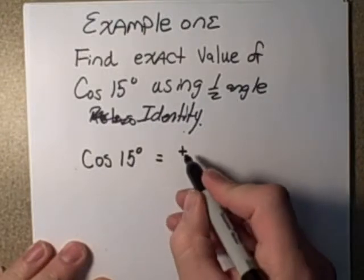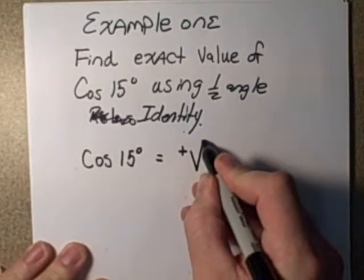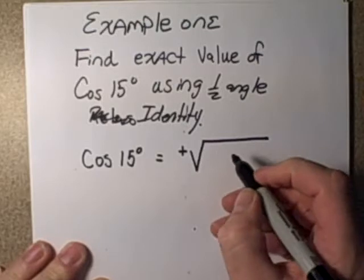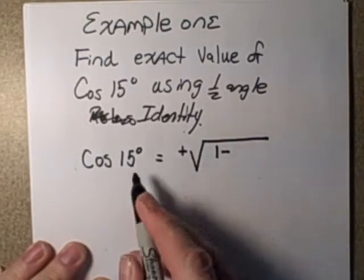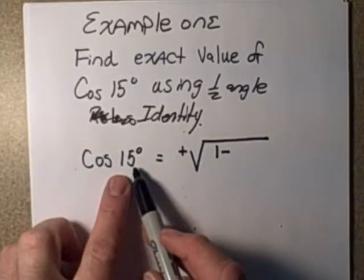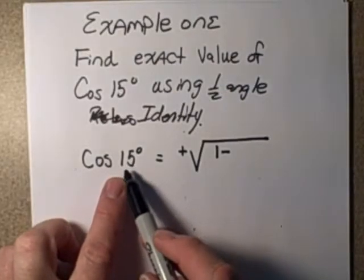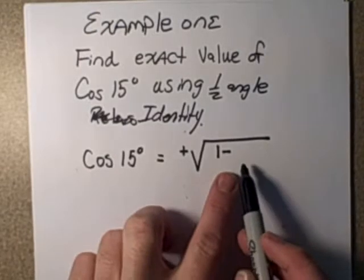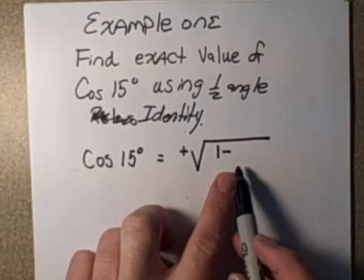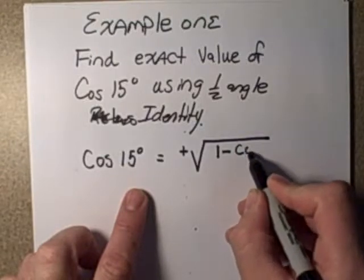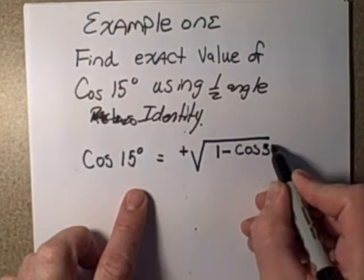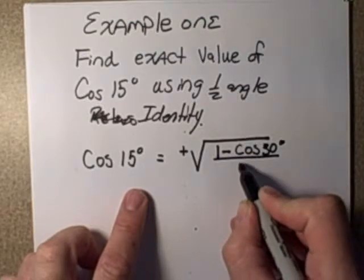So if we use the half angle identity, that's going to be the same thing as saying plus or minus. Well, since 15 is in the first quadrant, it's going to be plus. It's going to be 1 minus. But instead of the half angles here, this is half of it. So if this is 15 over 2 and we want to change it into theta over here, we have to multiply it by 2.